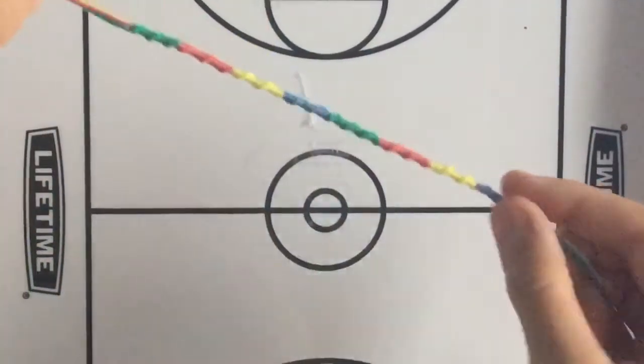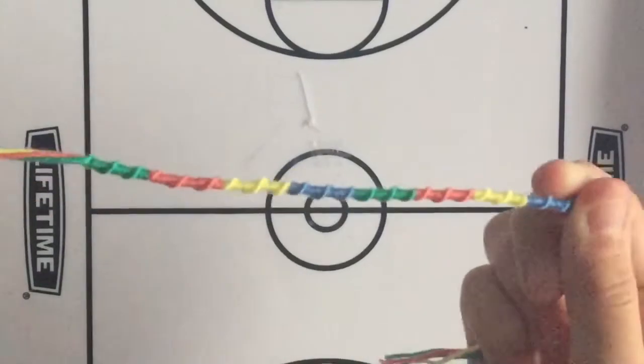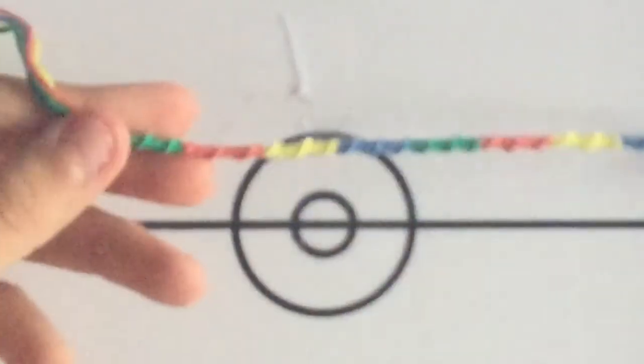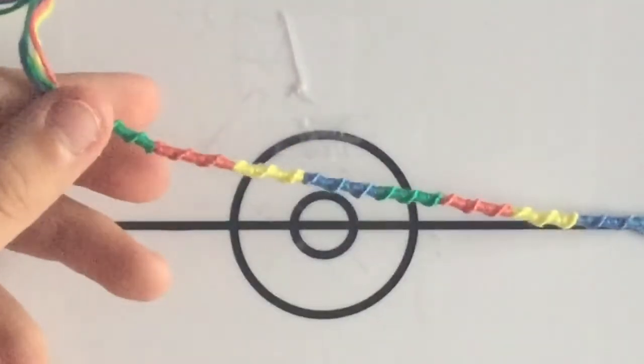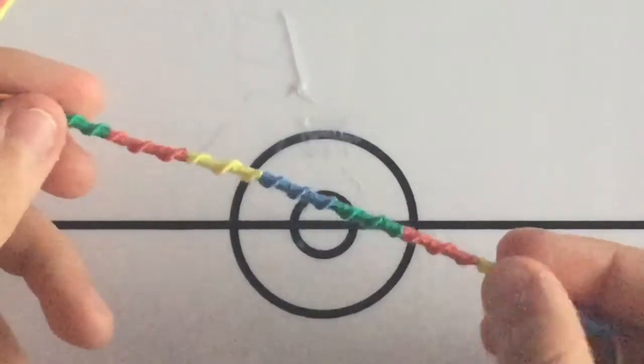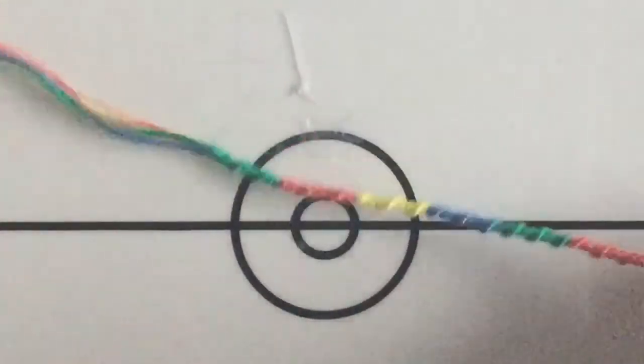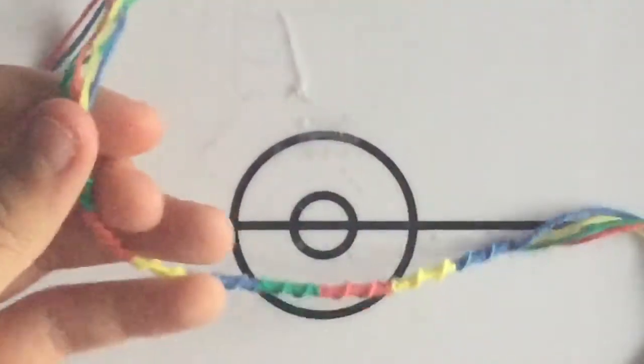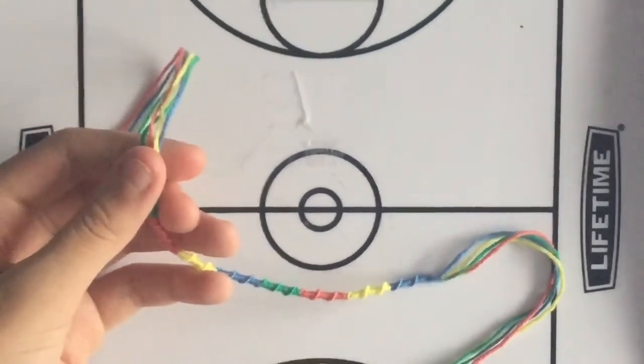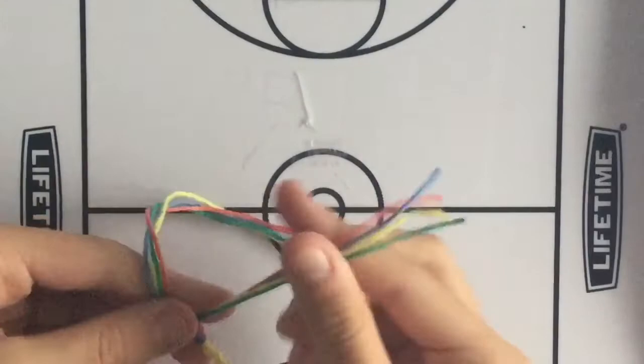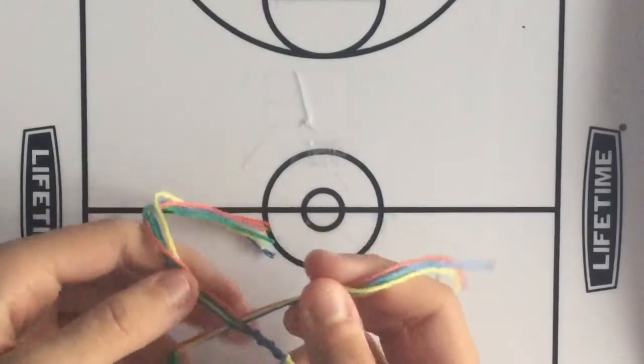Yeah, this is the finished Chinese staircase product. I really love this bracelet, it's really cute. Here are the twists from the Chinese staircase. And to put it on you just fold it over around your wrist and you can just take these ends and tie them together. And then that's your bracelet.